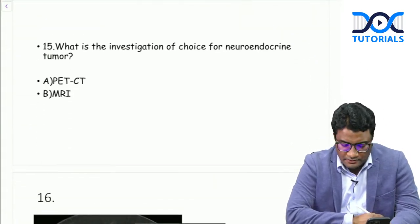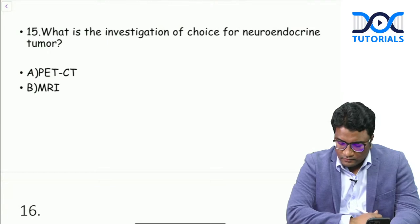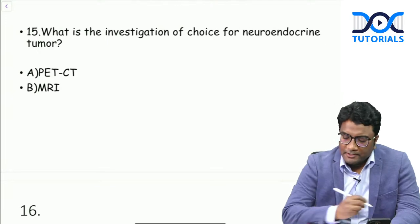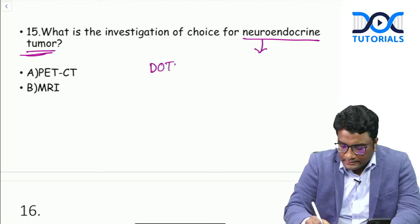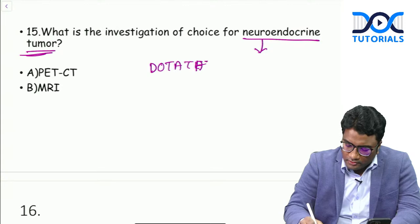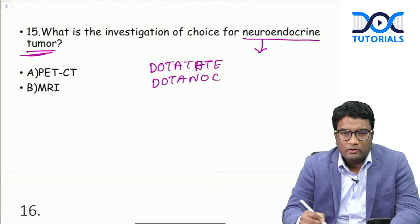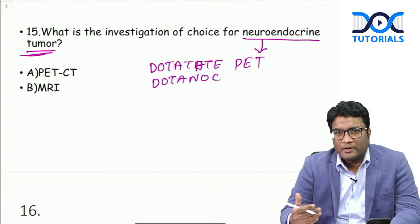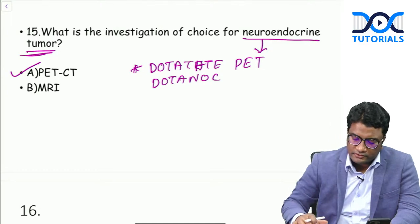What is the investigation of choice for neuroendocrine tumors? For neuroendocrine tumors, we go for DOTATATE or DOTANOC PET scan. These are somatostatin receptor ligands - neuroendocrine tumors are somatostatin receptor positive. For evaluating those, we use DOTATATE PET as the investigation of choice. DOTATATE PET is the investigation of choice for neuroendocrine tumors.